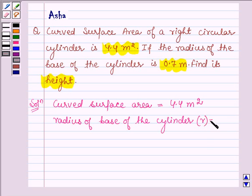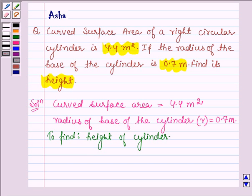denoting it by r, is equal to 0.7 m, and we have to find the height of the cylinder. Let us denote the height by h.